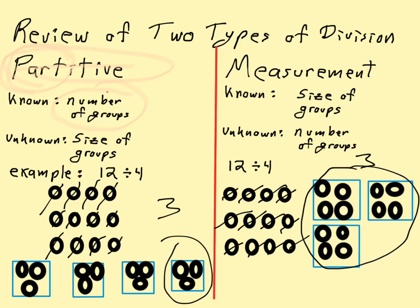So in this case, 3 represents the number of groups, not the size of the group. Those are the two types of division, and you're going to want to keep those definitions handy so that as we work through the fractions, those concepts will make more sense to you.